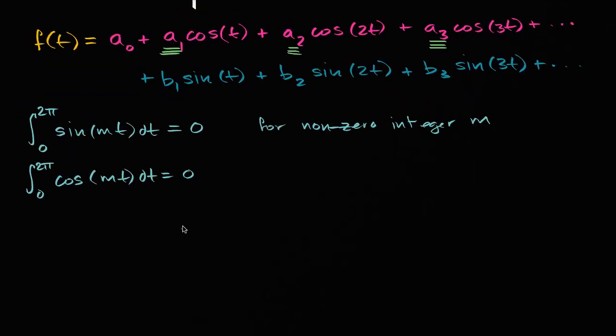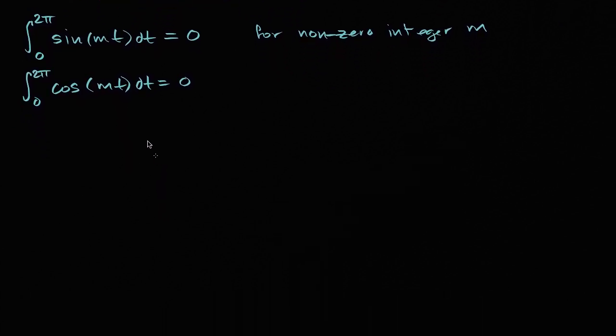We're working to build a mathematical foundation for definite integrals of various combinations of trig functions, so it'll be straightforward to find our Fourier coefficients in a few videos. We've already established that the definite integral from 0 to 2π of sin(mt) dt equals zero, and the definite integral of cos(mt) dt equals zero for any non-zero integer m.